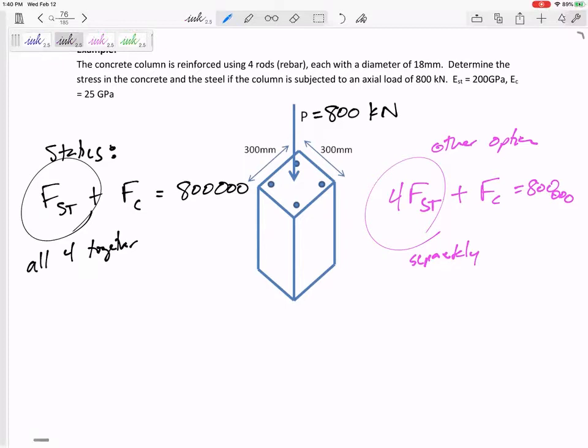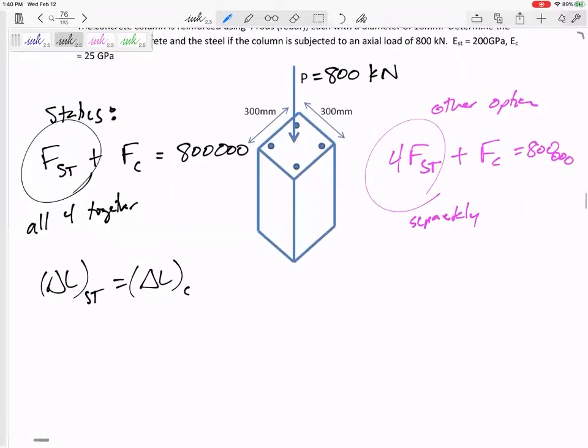Okay, so there's one equation. We need another equation. What's our other equation? The delta L of the steel is just equal to the delta L of the concrete, right? They're both compressing the same amount.